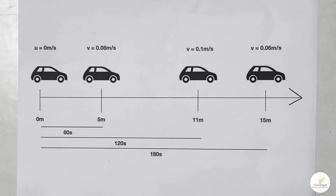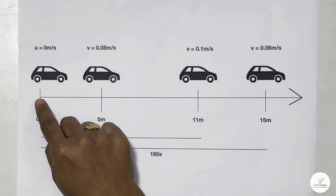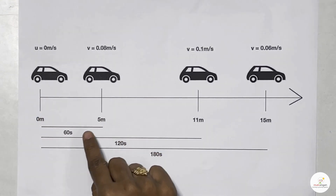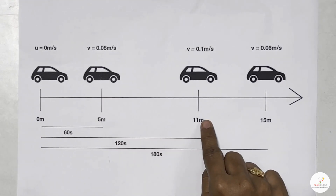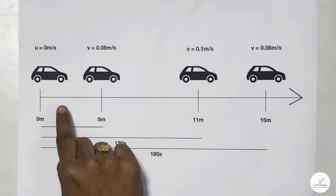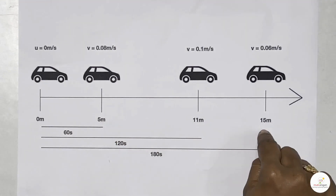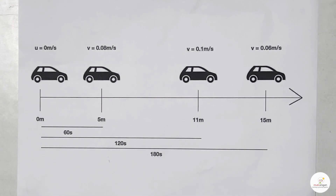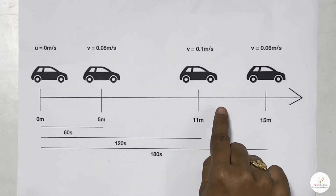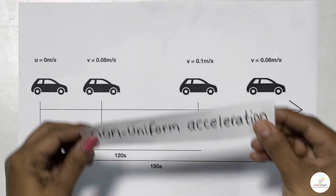Let's look at the next image. The initial velocity of the car is 0 meter per second. As it starts moving, it covers 5 meters in the first 60 seconds, then 11 meters in the second 60 seconds, then 15 meters in the third 60 seconds. This means the car's velocity is different at every 60 seconds. Therefore, this type of motion — where acceleration is not constant and does not cover the same distance in equal time intervals — is said to be non-uniform acceleration.